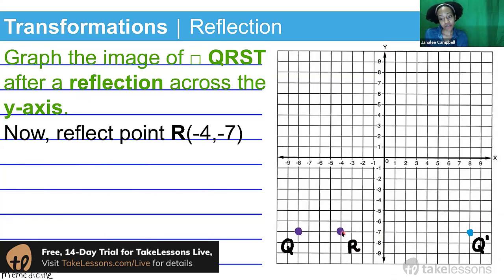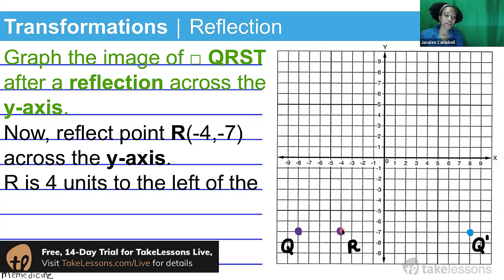Now, in our original figure, we had point R. Point R is located four units to the left and seven units down, at position negative four and negative seven. We're going to reflect it across the y-axis. So since R is four units to the left of the y-axis, to flip it about the y-axis, all we have to do is shift it four units to the right.